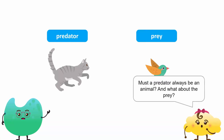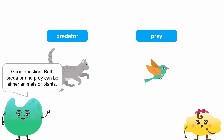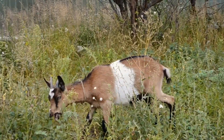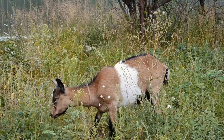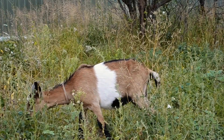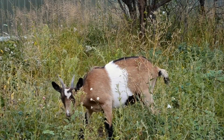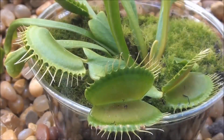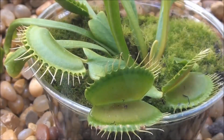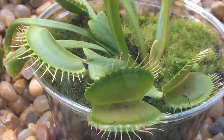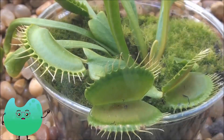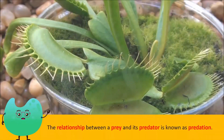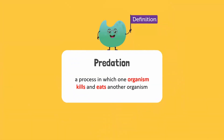Must a predator always be an animal? And what about the prey? Good question. Both predator and prey can be either animals or plants. For example, if a goat eats a plant and the plant is unable to grow again since its reproductive parts are eaten, that would make the plant a prey and the goat a predator. The Venus flytrap is a plant that feeds on insects. It attracts insects through its color and nectar. Once the insects land on its leaves, it traps them and slowly digests them. This relationship between a predator and its prey is known as predation — a process in which one organism kills and eats another organism.